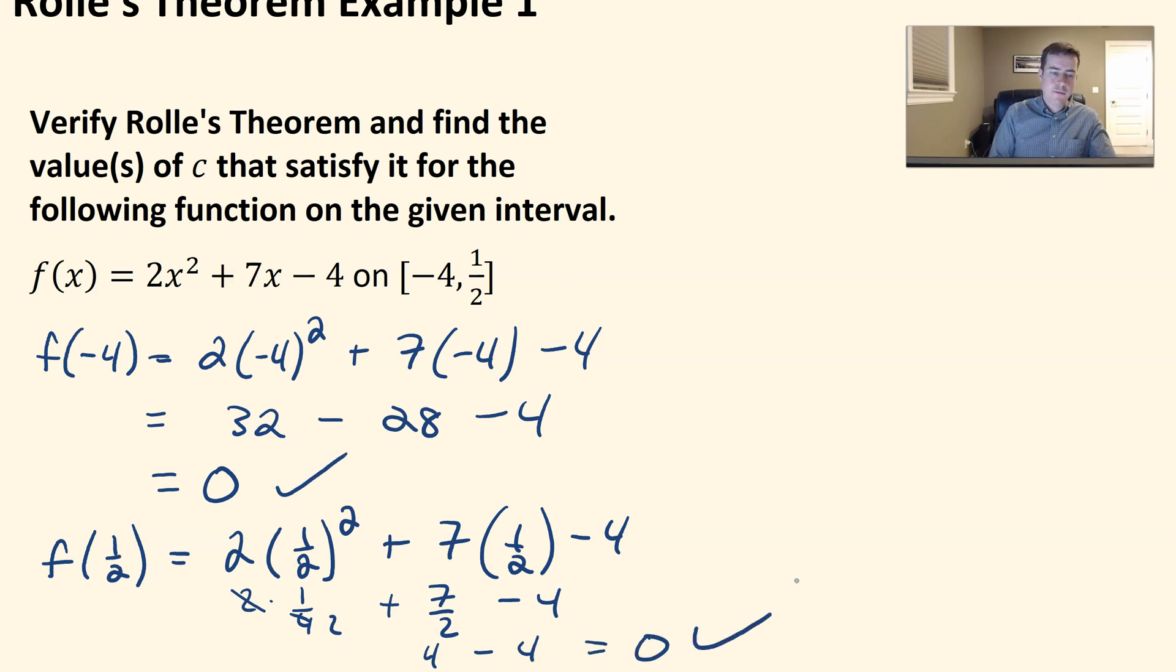So F of A does equal F of B here. So with that said, then there has to be some value of C that's in this interval where the derivative is equal to 0. Well, let's show where that is, or let's find where that is.